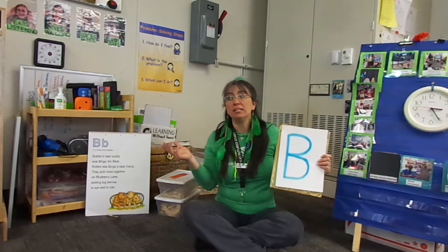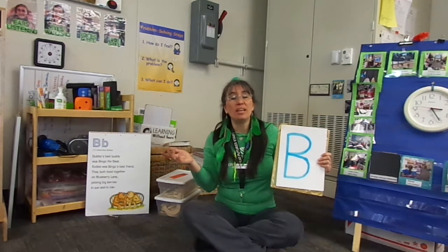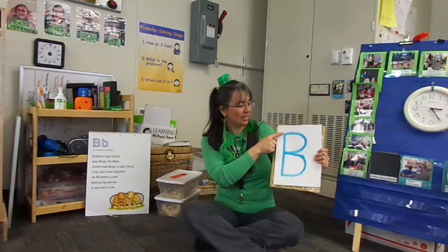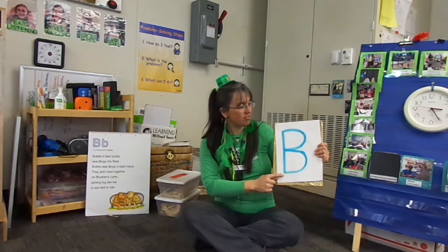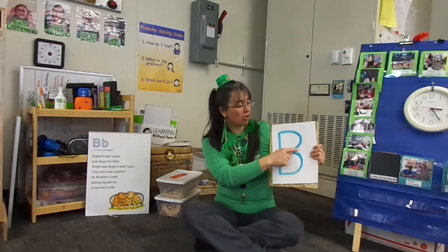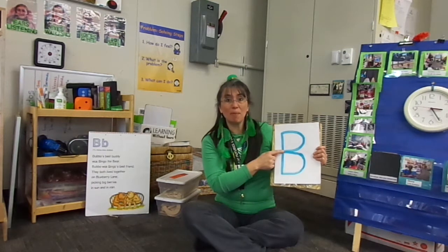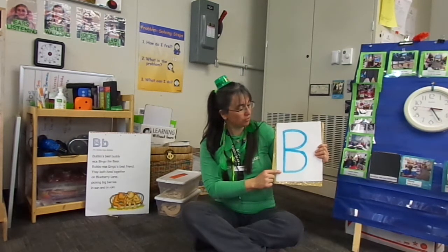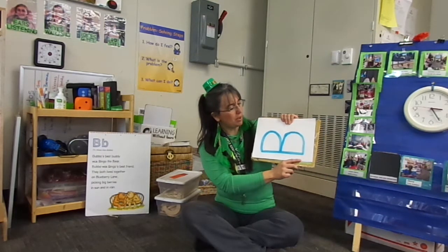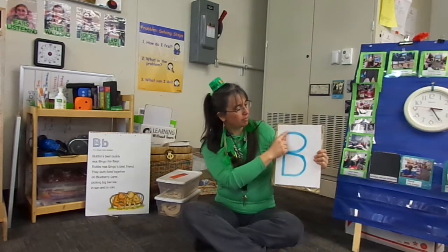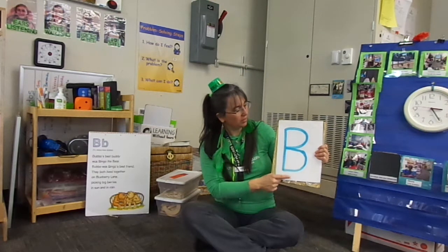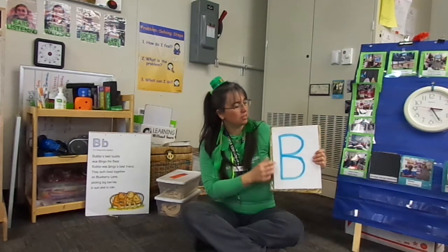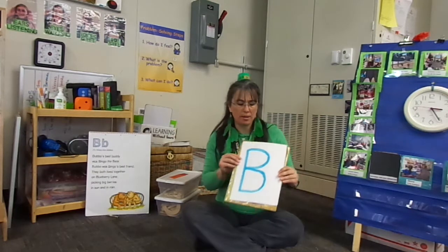How do we know it's a B? We know it's a B because it has a big line down, small curve at the top, small curve at the bottom. Two curves. It's like a mountain — bump, bump. Big line. Buh, buh, buh, buh.